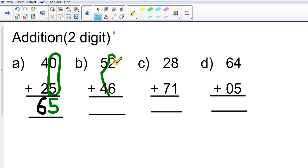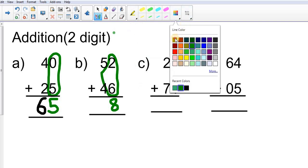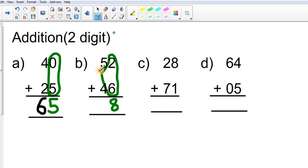So I will circle this ones number and I will go and stand on 6. I have to move two steps ahead, 7 and 8. So my answer is 8. And now I have to move to tens number, 5 plus 4. So I am standing on 5. I have to move 4 steps ahead, 6, 7, 8 and 9. So my answer is 9. So 98 is my answer.